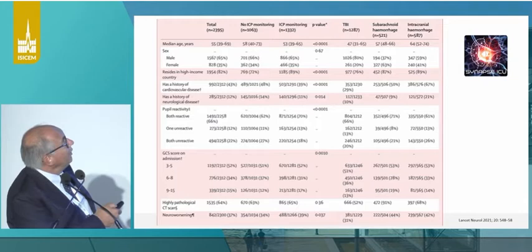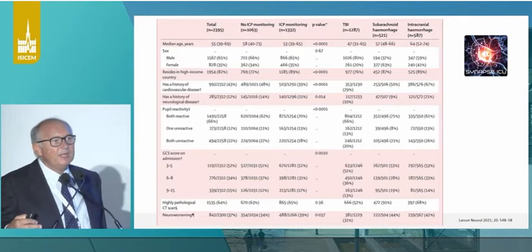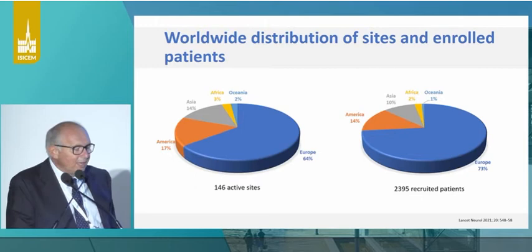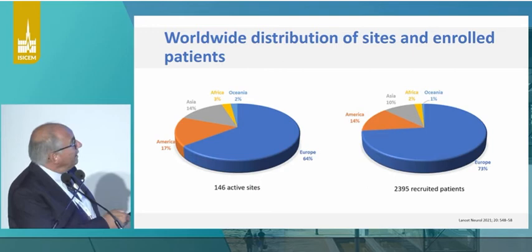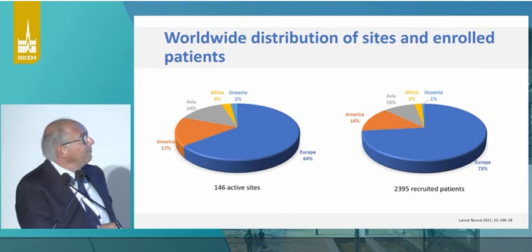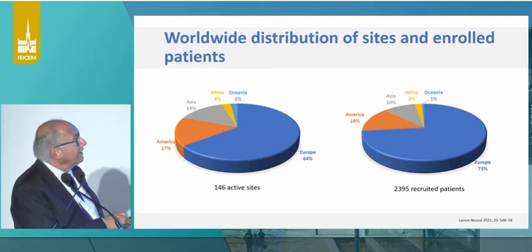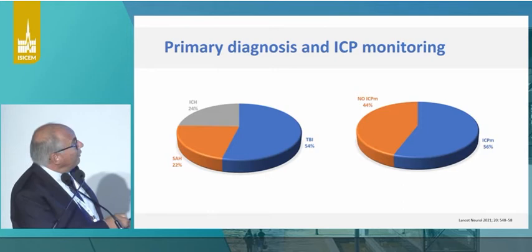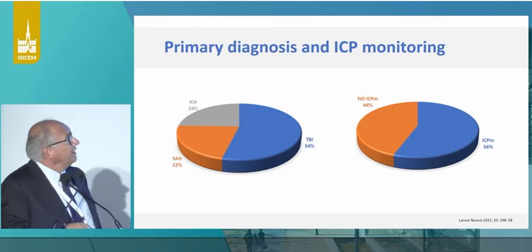Looking at the population, it's a typical population — roughly 55 years old, with older patients having intracerebral hemorrhage. We have mainly data from America and Europe, though we were also able to include some patients from Africa — which usually doesn't come to clinical trials — and from Oceania. For example, we have 10 centers in Nepal. Half the population had TBI, the other half was split equally between intracerebral hemorrhage and subarachnoid hemorrhage, and 56% had ICP monitoring.